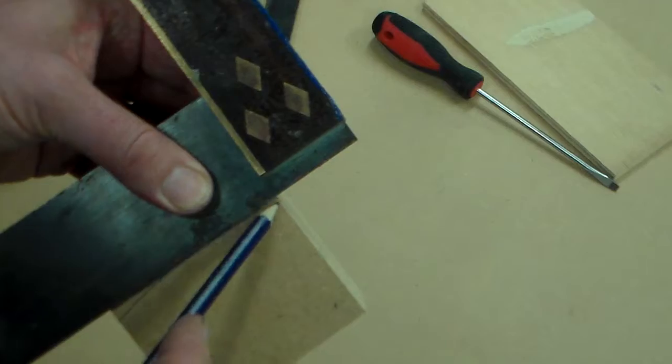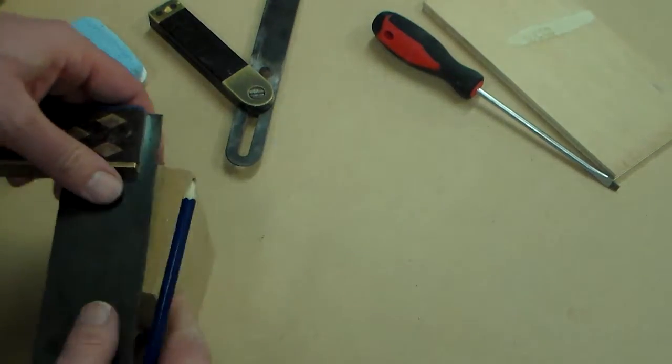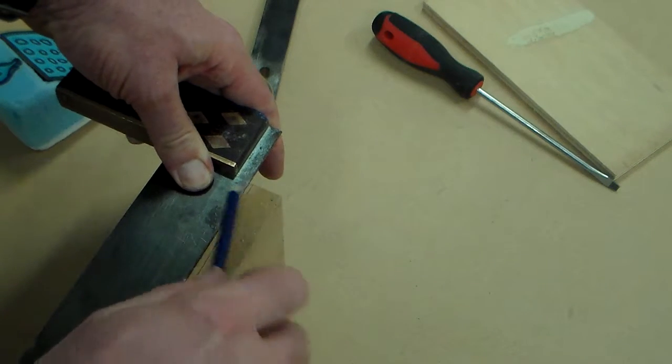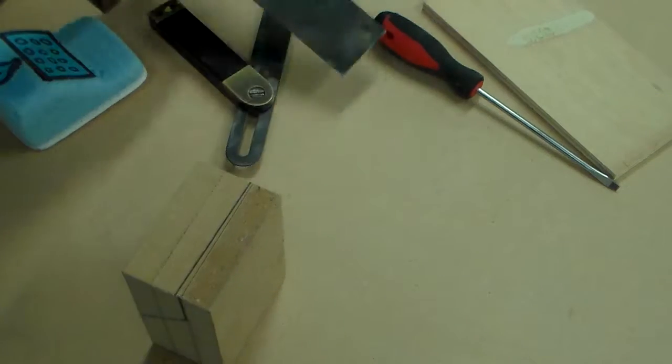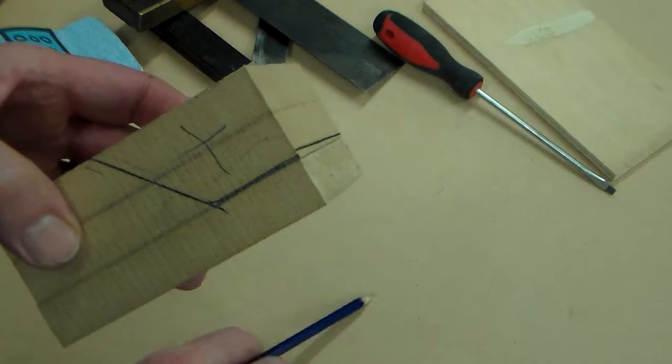Now, what I'm using here is I'm using a tri-square to transfer my dimensions, or my drawings, across the shape of the object. So now we've got a piece here that we know we have to remove.